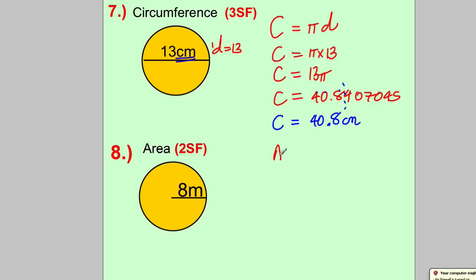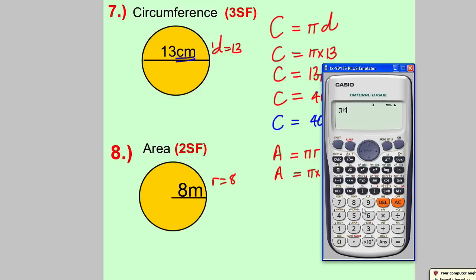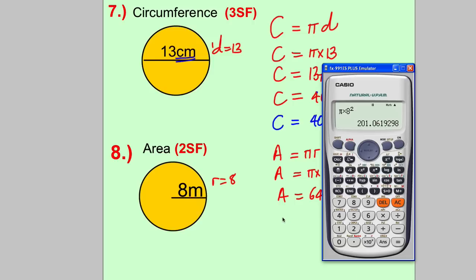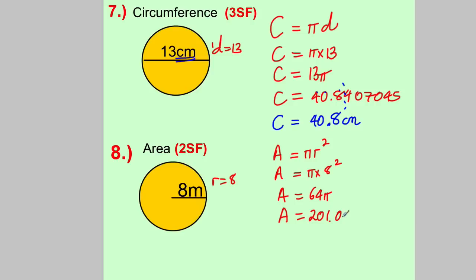For area, remember: apple pies are too — A = πr². Here r = 8, so area = π × 8² = 64π. On the calculator: π × 8² gives 64π; press SD to get 201.0619... The full answer is 201.06192982... Rounding to two significant figures: the first significant figure is 2, the second is 0, and the line falls after that. The digit doesn't change it, so the area is 200 m².